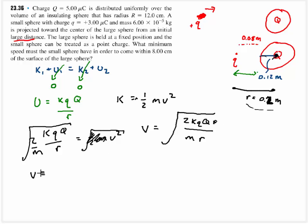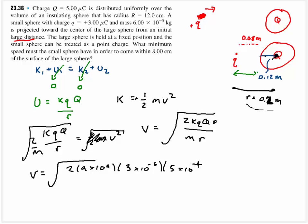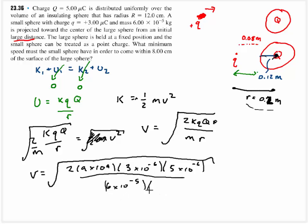Plugging everything in: the velocity equals the square root of 2 times 9 times 10 to the 9th, times little charge 3 times 10 to the minus 6 coulombs, times big charge 5 times 10 to the minus 6 coulombs, divided by mass 6 times 10 to the minus 5th kilograms, and radius 0.2 meters. The speed comes out to be 150 meters per second.